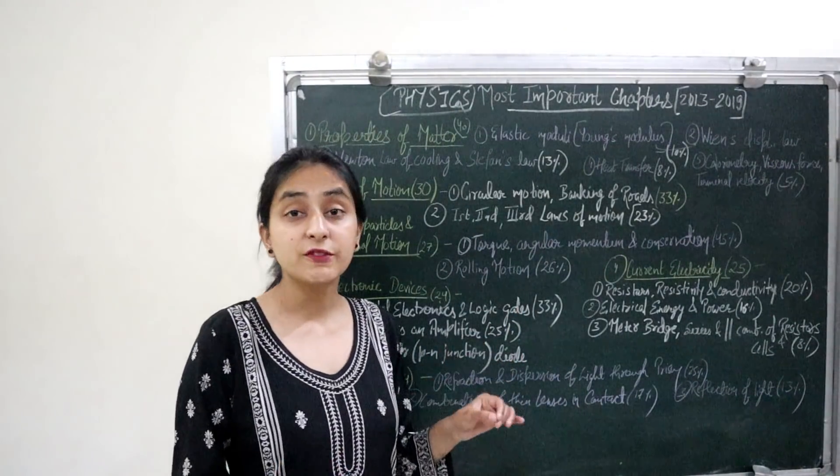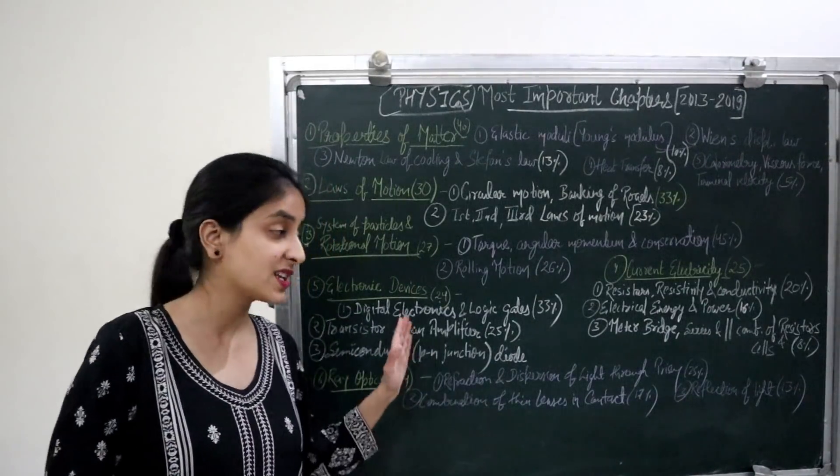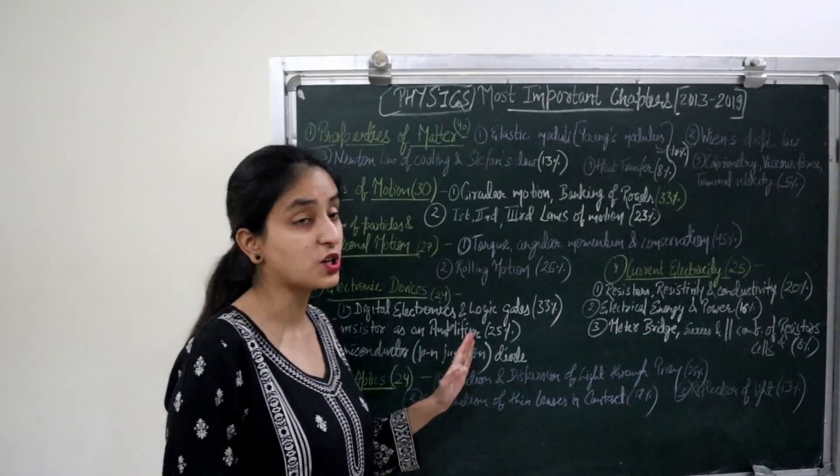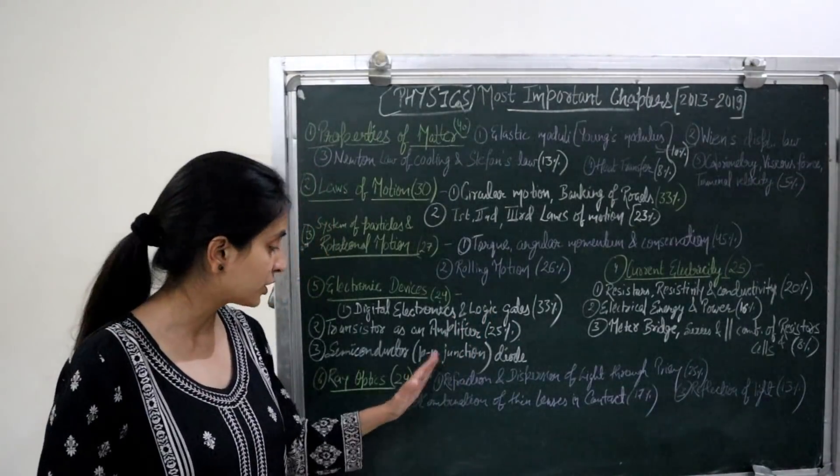Transistor as an Amplifier, 25% questions in the past 7 years in this topic. Third, Semiconductors, PN Junction Diode. These are the important topics in this chapter.